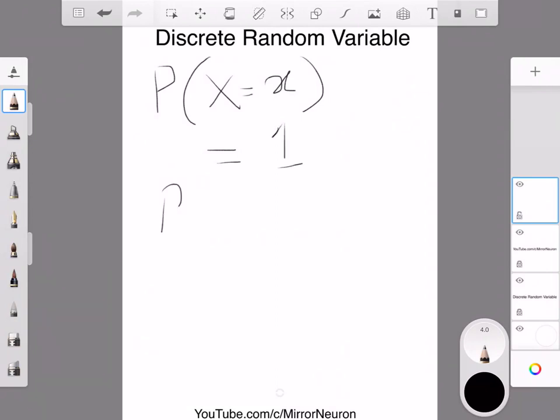So basically, probability of getting 0, probability of getting 1 head, or probability of getting 2 heads and so on. In this case, of course, we have 0, 1, and 2.